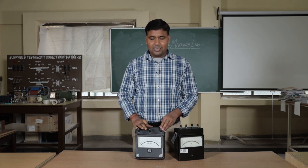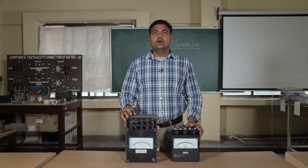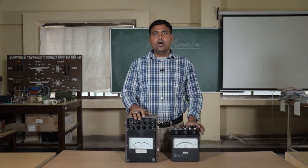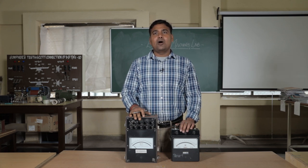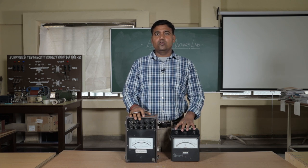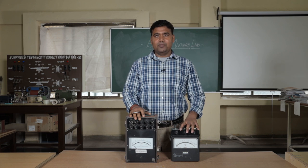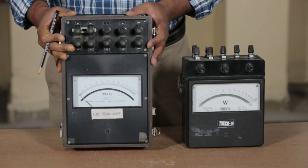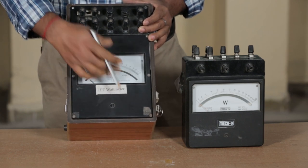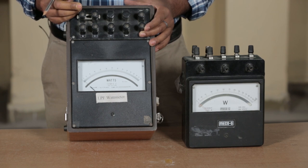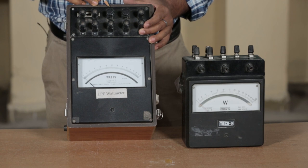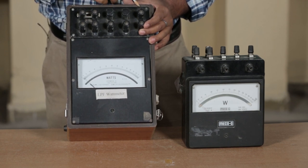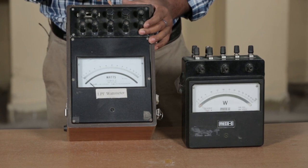To measure power, we require a wattmeter. Wattmeter can be of two types: low power factor wattmeter or unity power factor wattmeter. Power factor can vary from 0 to 1, where 1 indicates unity power factor. Whenever we want to measure at unity power factor condition, we use the UPF wattmeter. To measure at low power factor, we use the low power factor wattmeter. We have a current coil and a pressure coil (voltage coil) in the wattmeter, whose terminals are represented by L, M, and a common point.